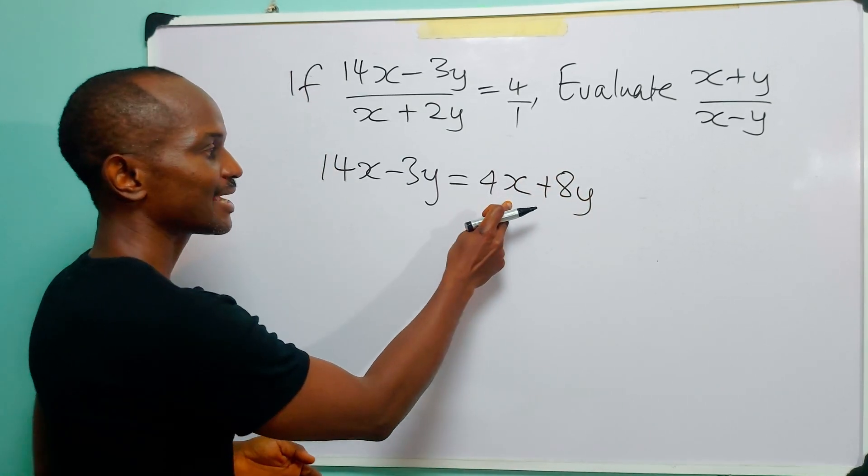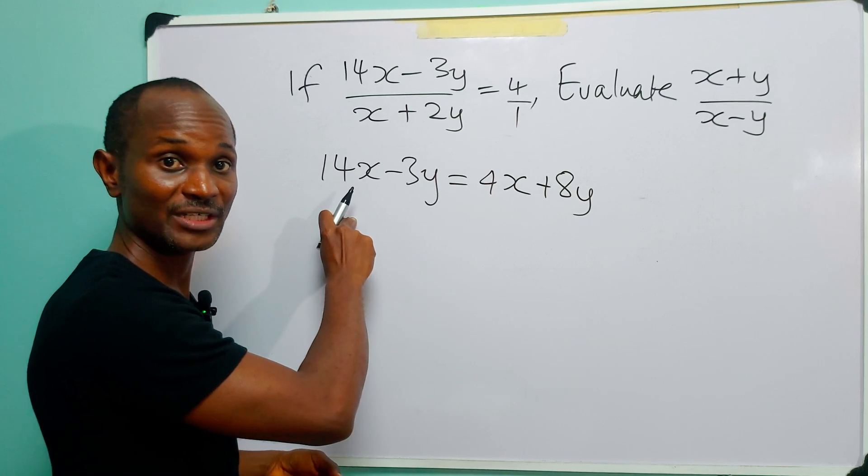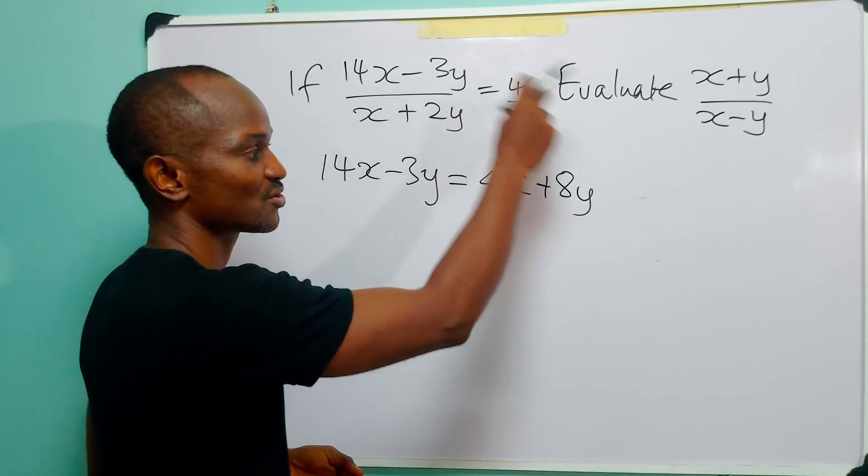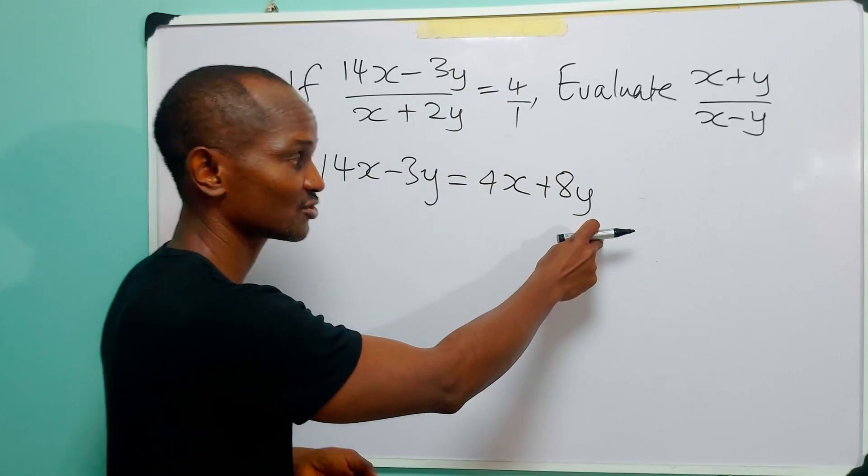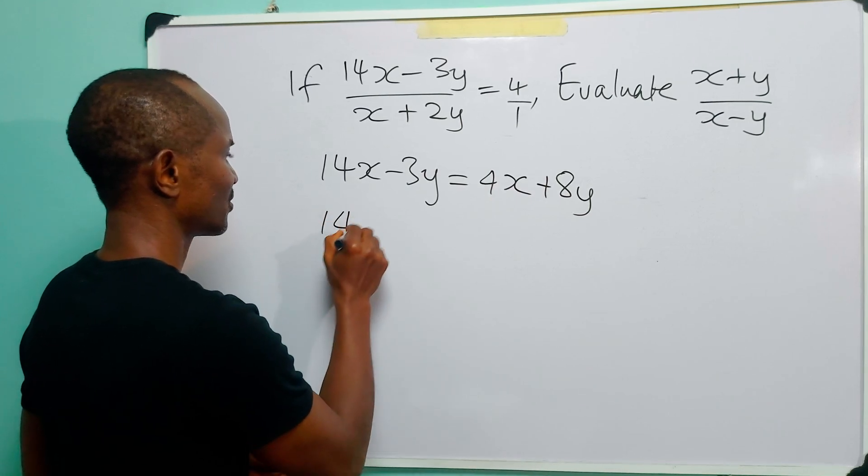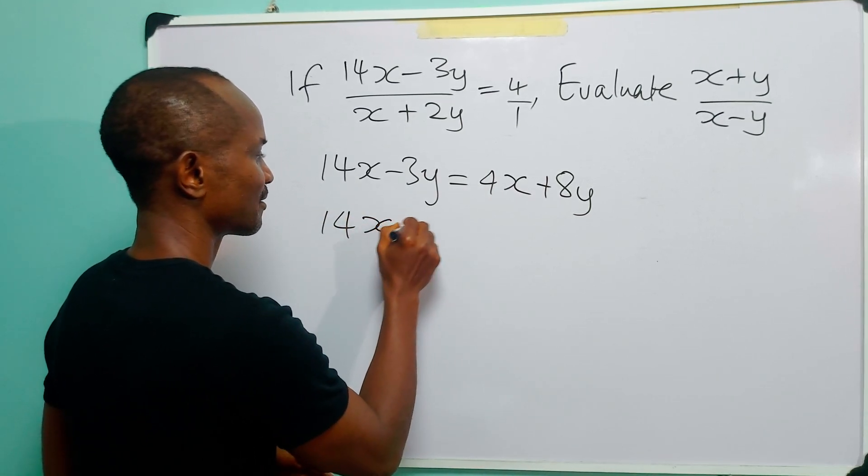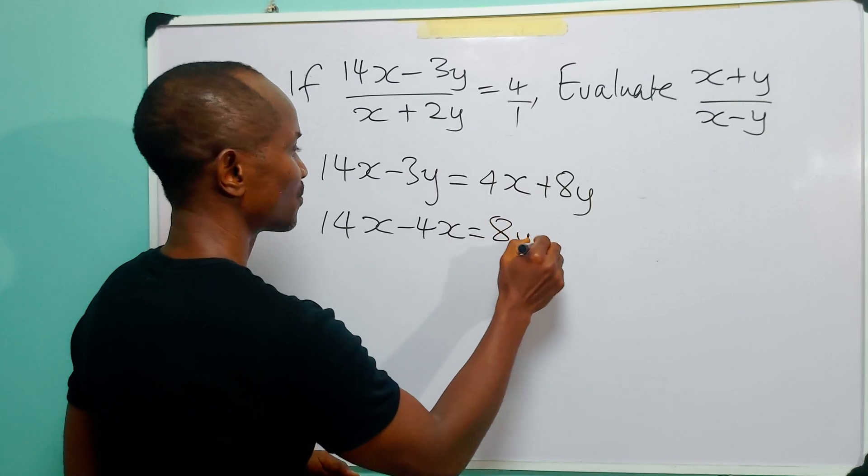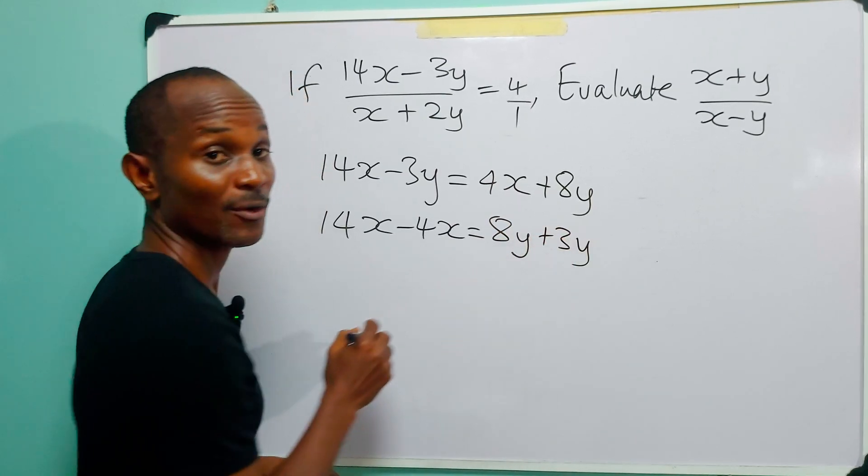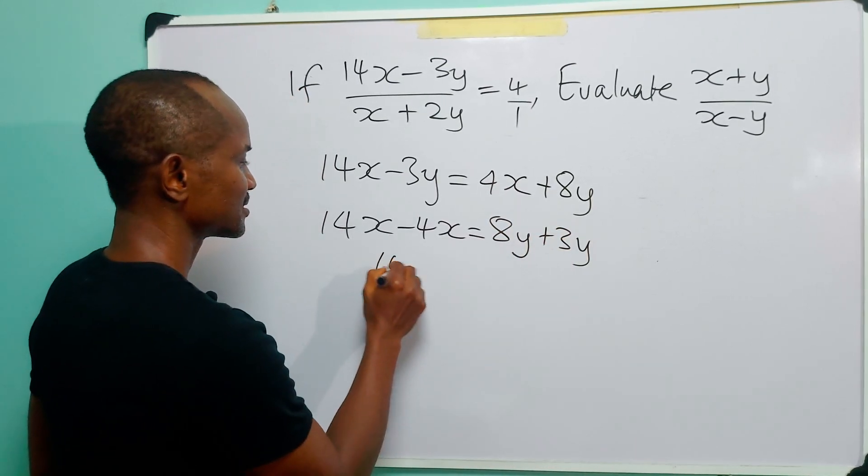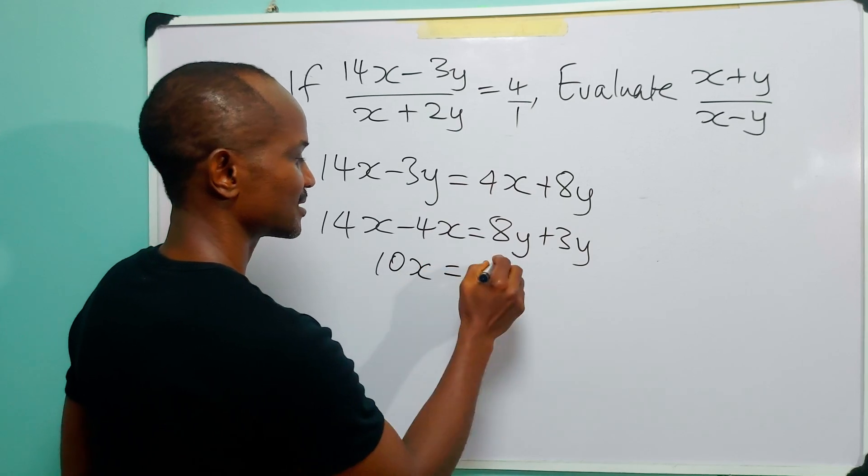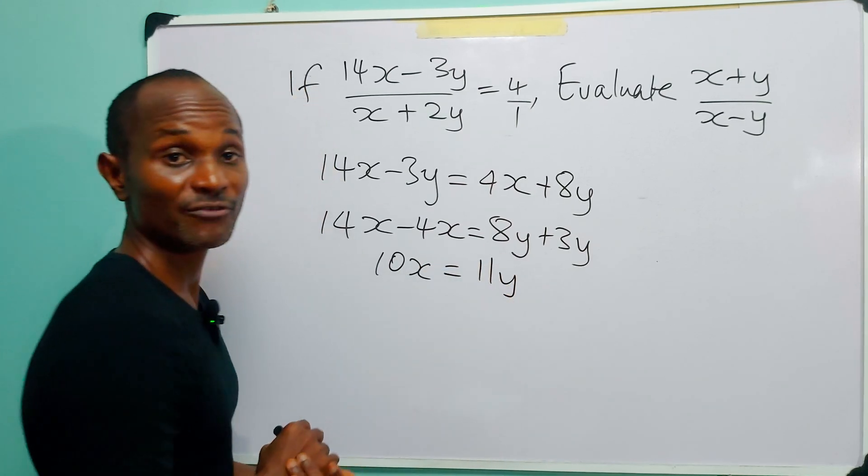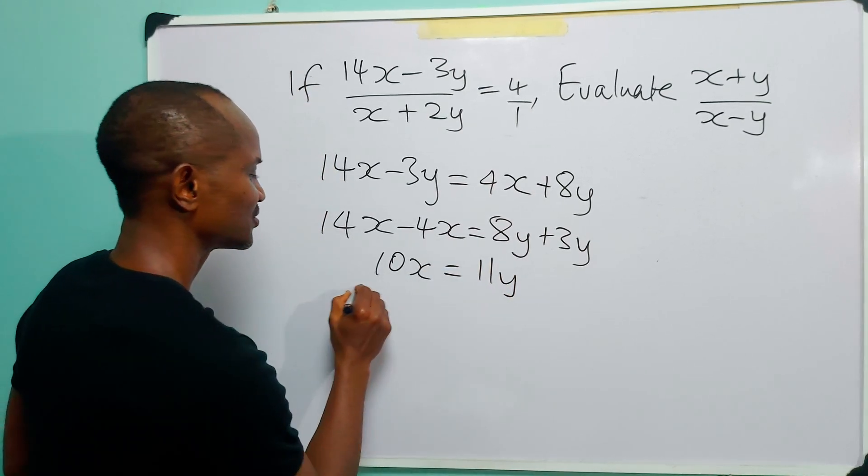Now we take all the x terms over to the left-hand side of the equation and all the y terms over to the right-hand side of the equation. So we have 14x - 4x = 8y + 3y, and this is 10x = 11y.